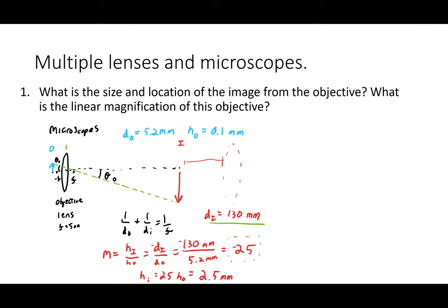Many microscopes do operate this way — what you see at the end is upside down. Moving the stage around can feel unintuitive for first-time users because of this inversion.